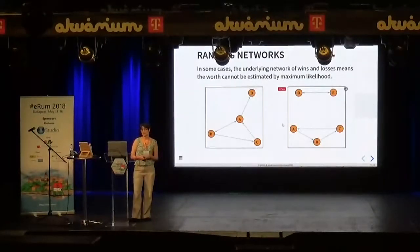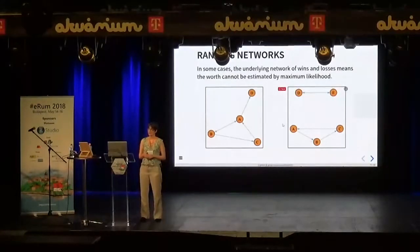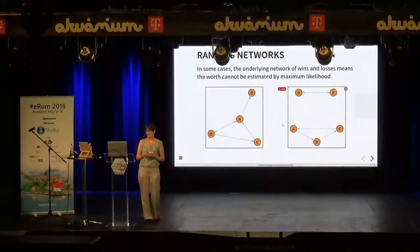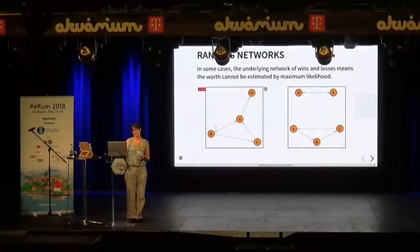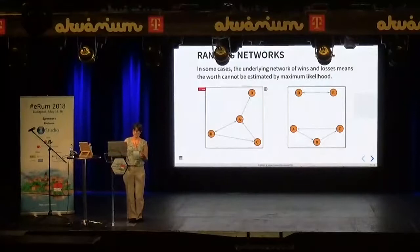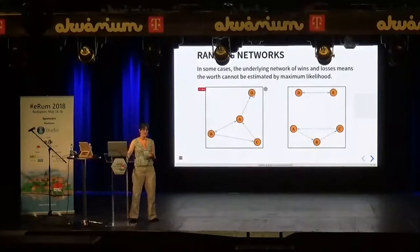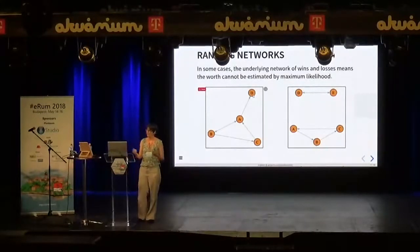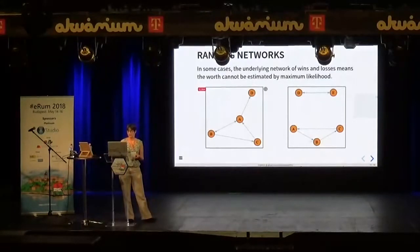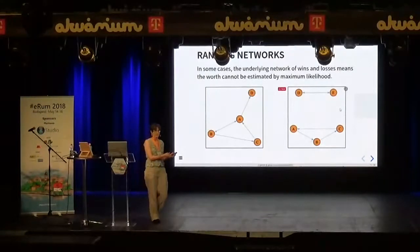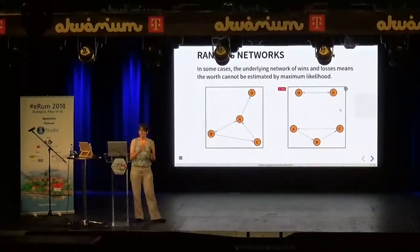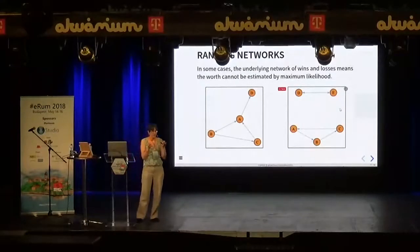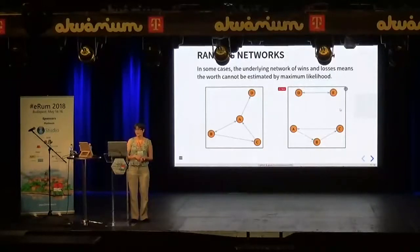Another problem in real applications is that the underlying network of wins and losses implied by the ranking may not be sufficiently connected to estimate the maximum likelihood. For example, if item D only ever loses, there's no bound on how low the log worth can go — the maximum likelihood estimate is negative infinity, which is not particularly useful. In other cases we can have completely disconnected networks, with comparisons within one cluster (say D and E) and another (A, B, and C), but no idea how those clusters relate to each other in terms of relative worth.